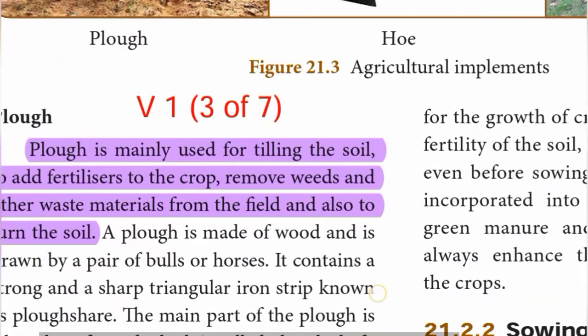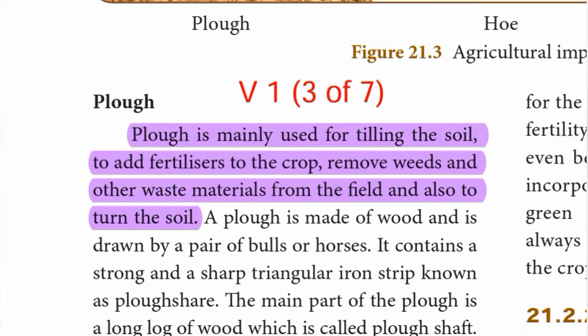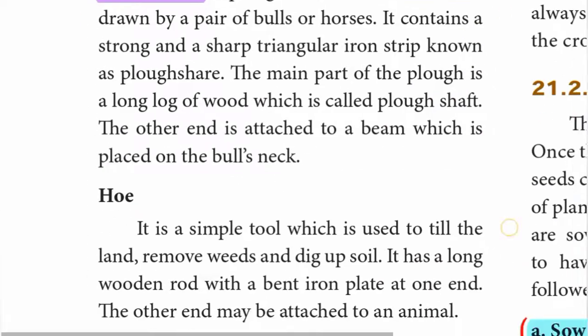Third point — plow: A plow is mainly used for tilling the soil, to add fertilizers to the crop, remove weeds and other waste materials from the field, and also to turn the soil.